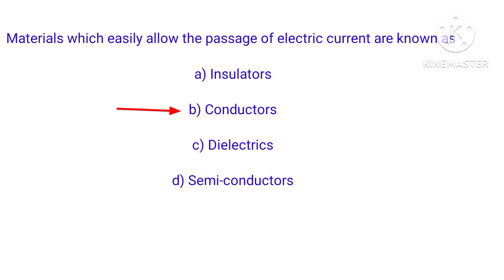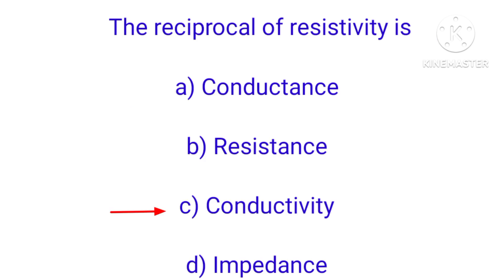Materials that easily allow the passage of electric current are known as conductors. The opposite of conductors are insulators. Materials that are in between are semiconductors.